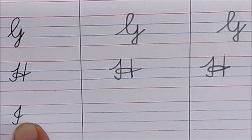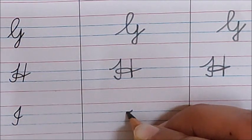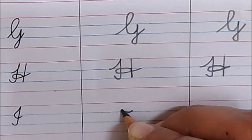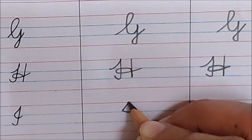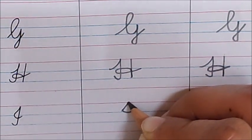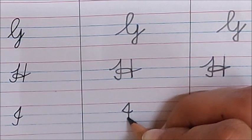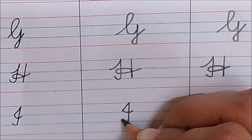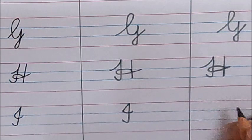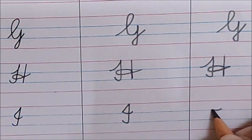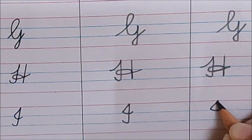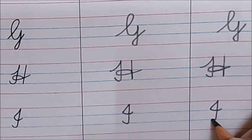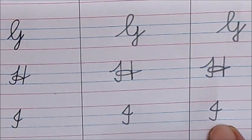Now this is letter I. First you have to make a small smiley like this. Can you see the small smiley? Now go up. Now you have to cut the smiley — cut the smiley. Make a standing line and again come up. Very simple. Small smiley, go up, now cut it, cut the smiley, come down, and bring it a little up. This is letter I.